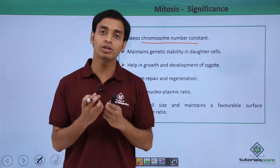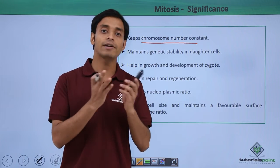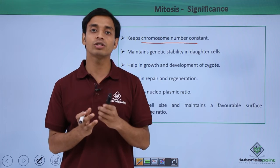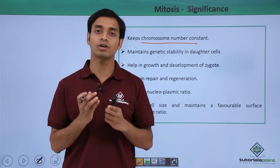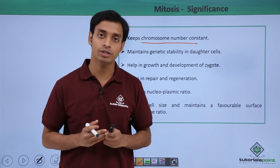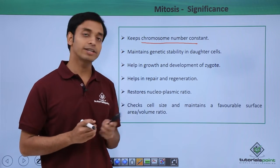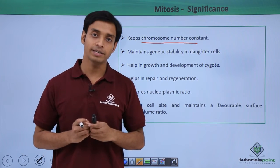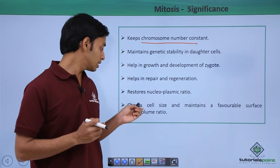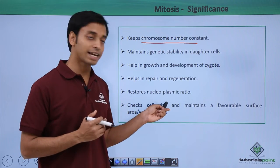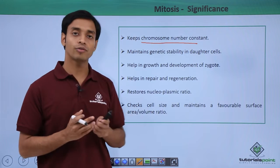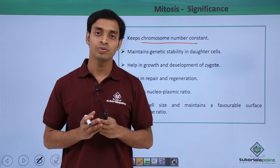Mitosis restores the nucleoplasmic ratio — that is, the amount of the nucleus or genome relative to the amount of protoplasm. This ratio is very important for a cell's survival and for cell division. The nucleoplasmic ratio is maintained through mitosis.